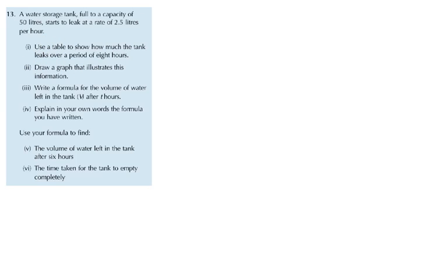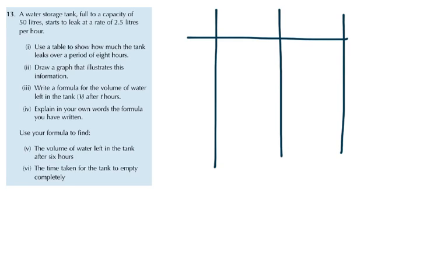A 50 litre tank starts to leak at a rate of 2.5 litres per hour. So use a table to show how much the tank is leaking. You're going to have this here as the litres and this here is hours. L-I-T-R-E-S, litres. Okay, we start at 50 litres and the hours is 0.